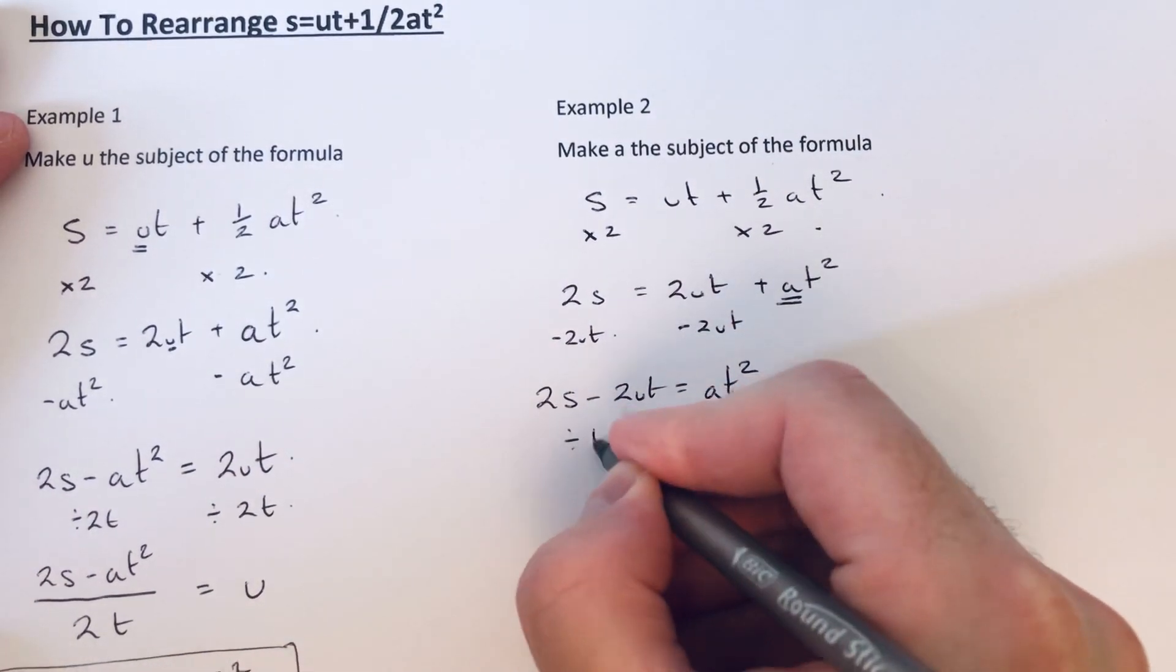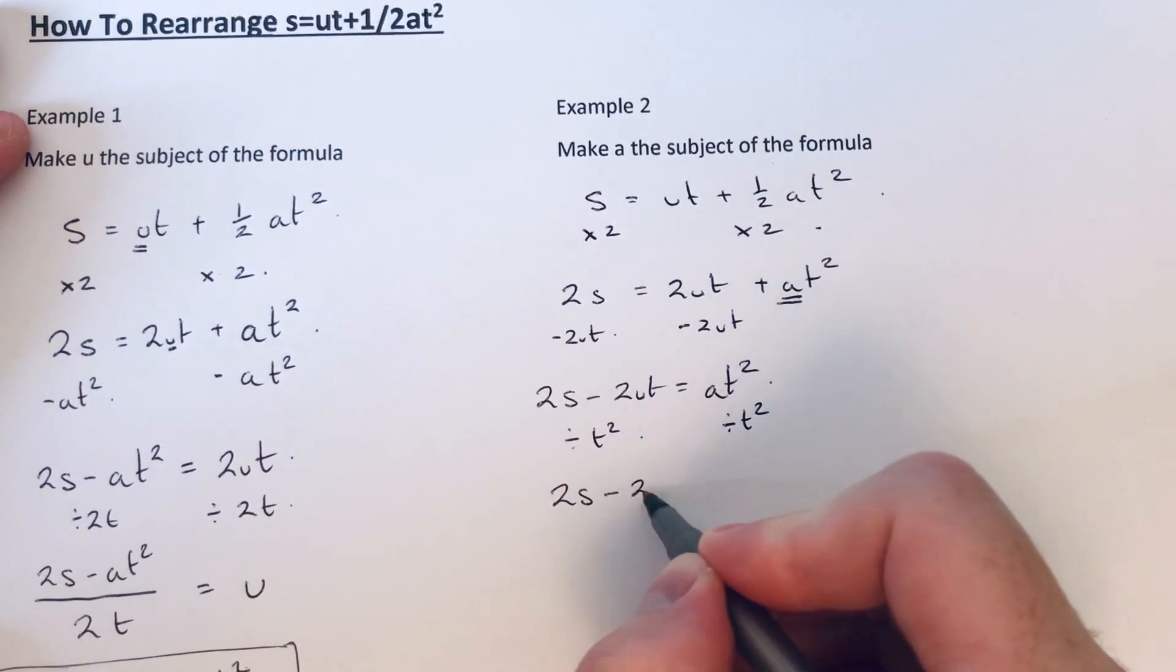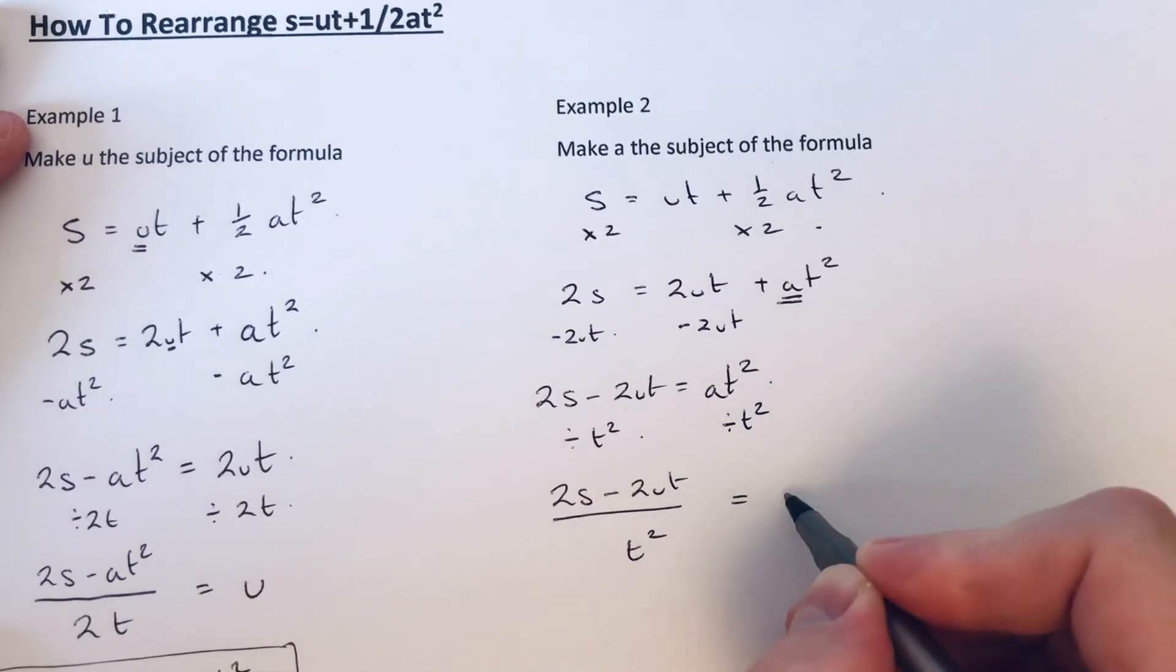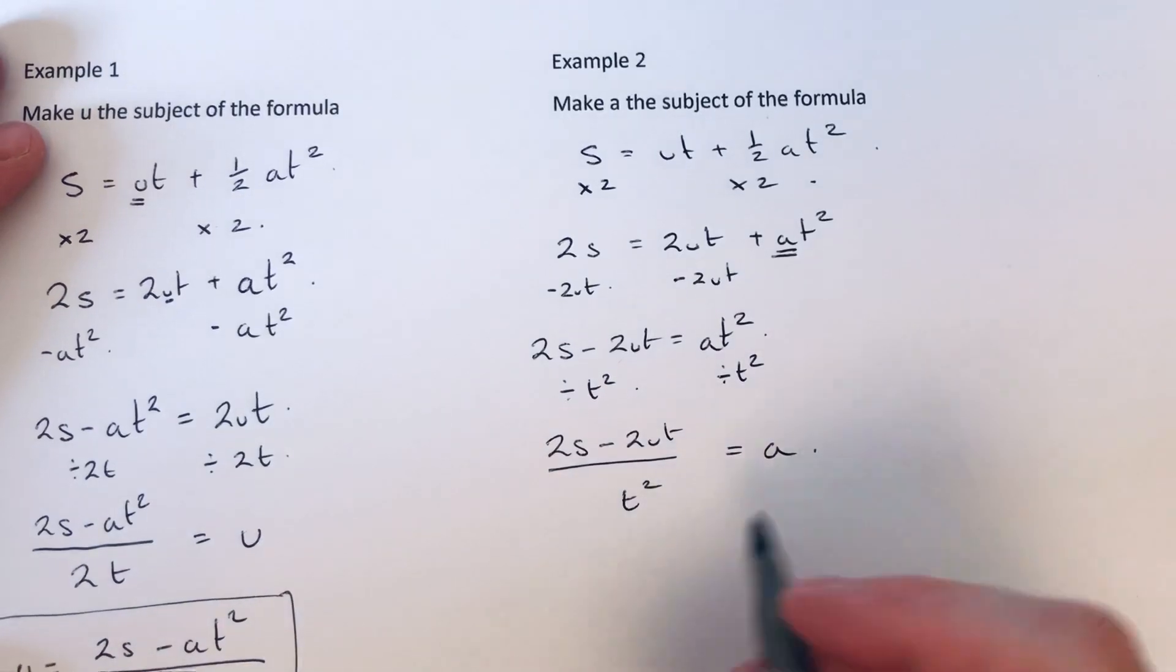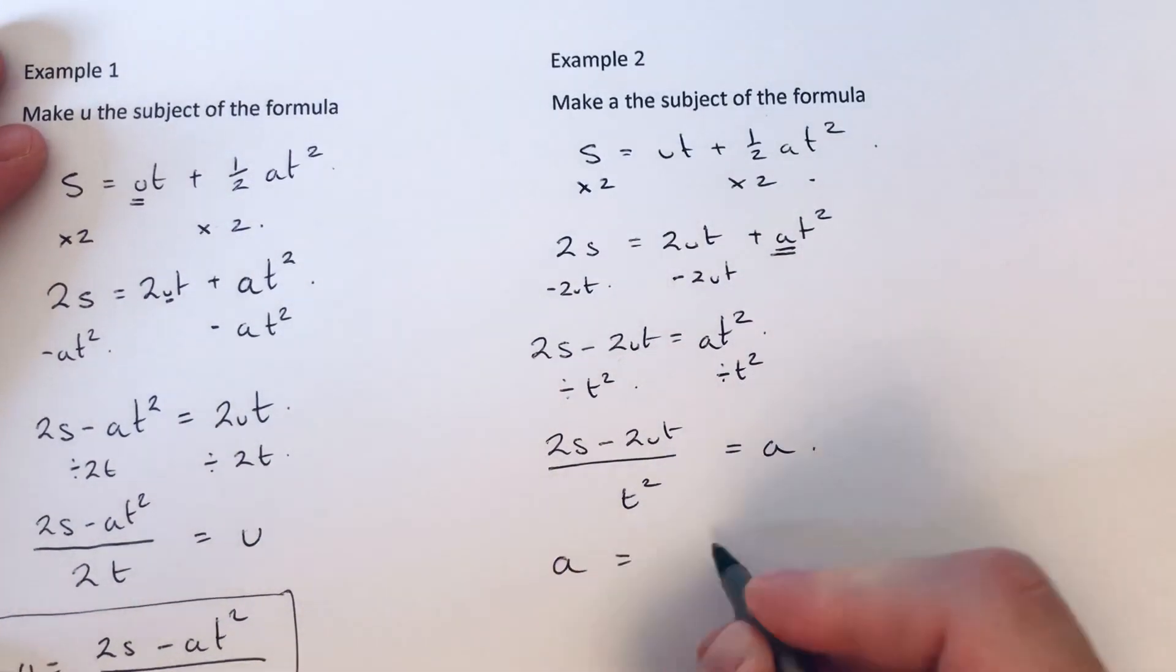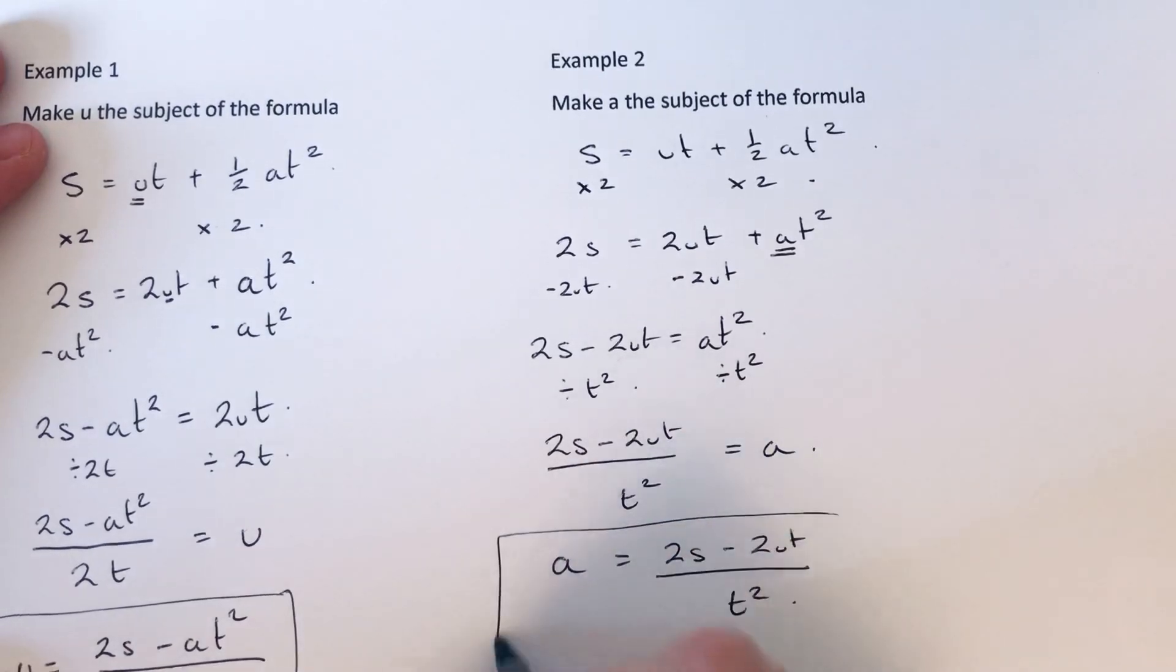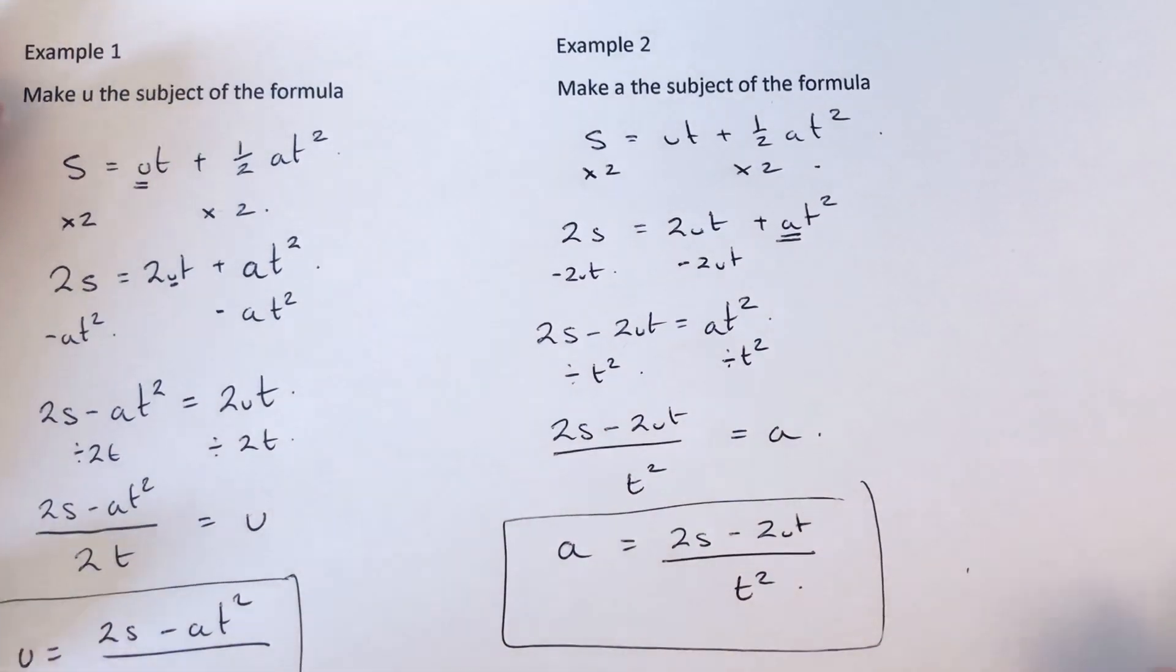And then the final step: a is being multiplied by t squared, so we just need to divide both sides by t squared. So that will give 2s minus 2ut over t squared equals a. And we just copy the formula with the a at the start. So our formula for a is 2s minus 2ut over t squared.